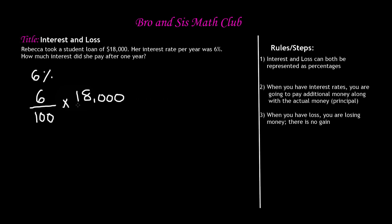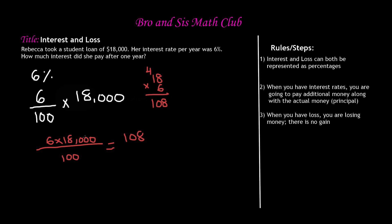Now we multiply. Remember, whenever you have zeros you can multiply the numbers first and add the zeros back. So we do six times eighteen: eight times six is forty-eight, carry the four; six times one is six, plus four is ten. So six times eighteen equals one hundred and eight. We had six times eighteen over one hundred and got one hundred and eight.